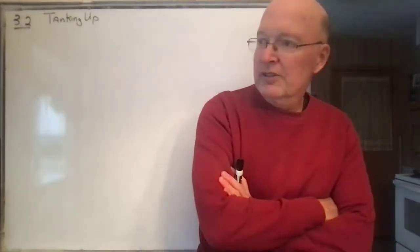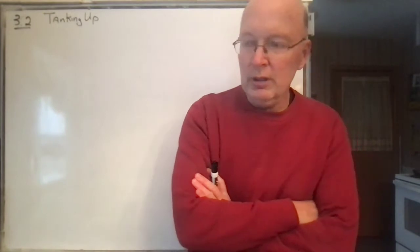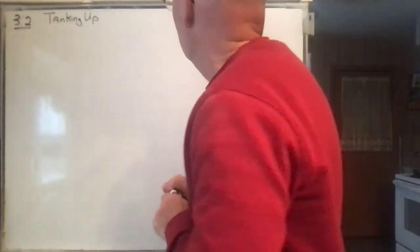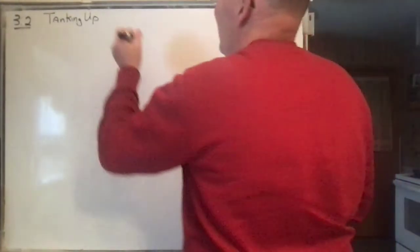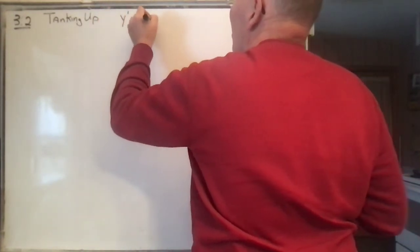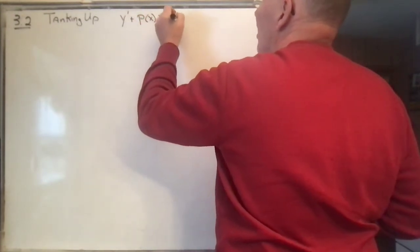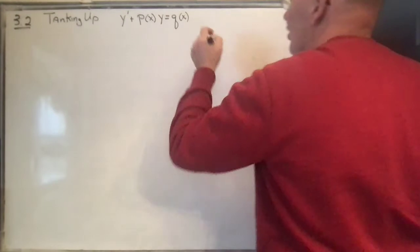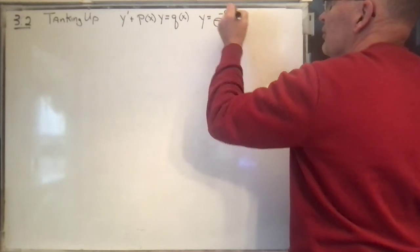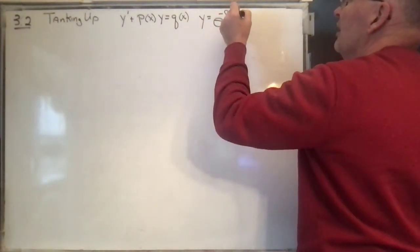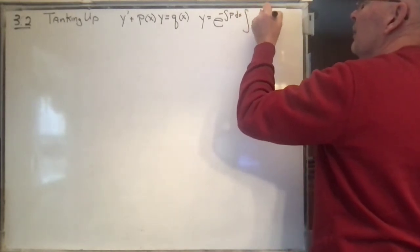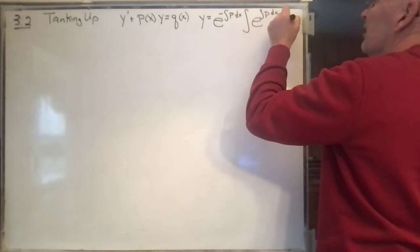In the last section we solved first-order linear differential equations and found out how to get the solution. By way of a quick review, if we have something of that form, then the solution was e to the negative integral of p dx, times the integral of e to the positive p dx times q of x dx.